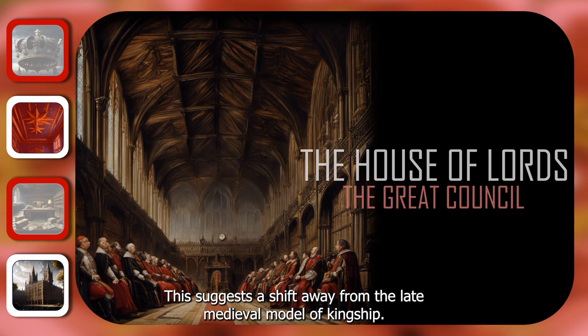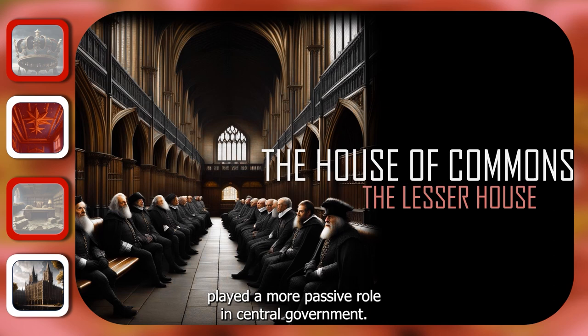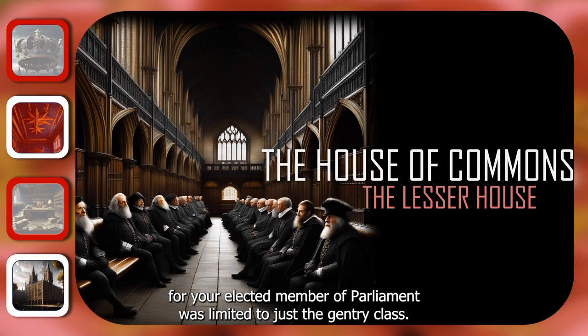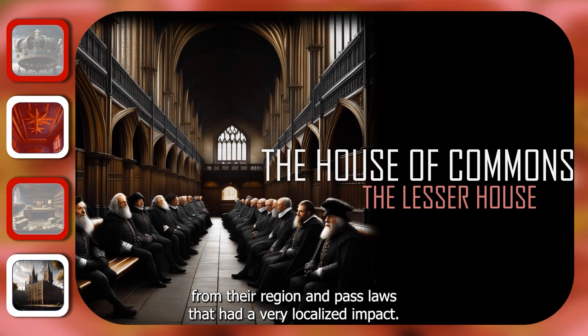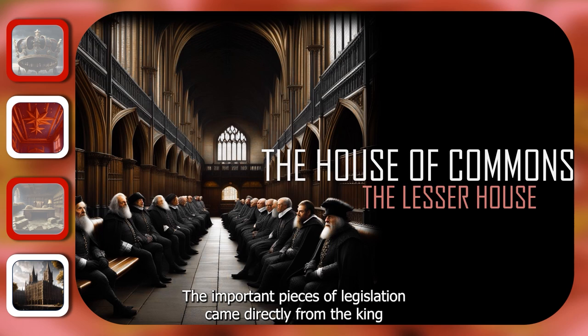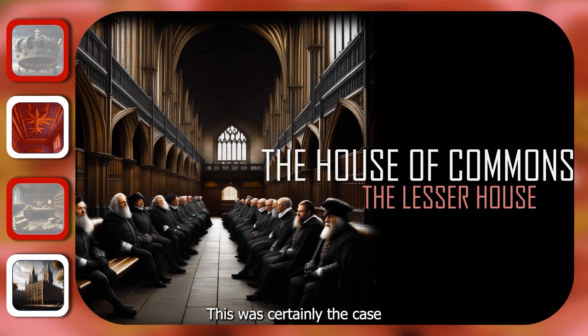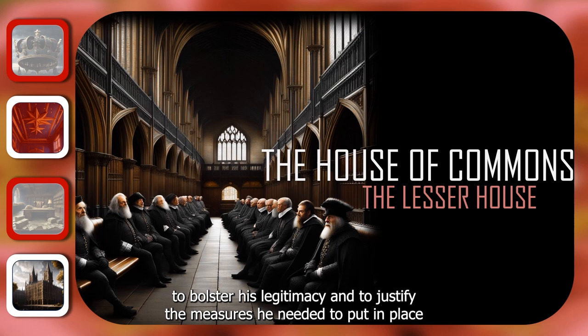The House of Commons played a more passive role in central government. The right to vote for your elected member of parliament was limited to just the gentry class. These representatives would use their position in Parliament to bring petitions from their region and pass laws that had a very localised impact. The important pieces of legislation came directly from the king or his advisers, and was usually passed without opposition. Parliament essentially became a tool of the king to bolster his legitimacy and to justify the measures he needed to put in place for the security of his dynasty.